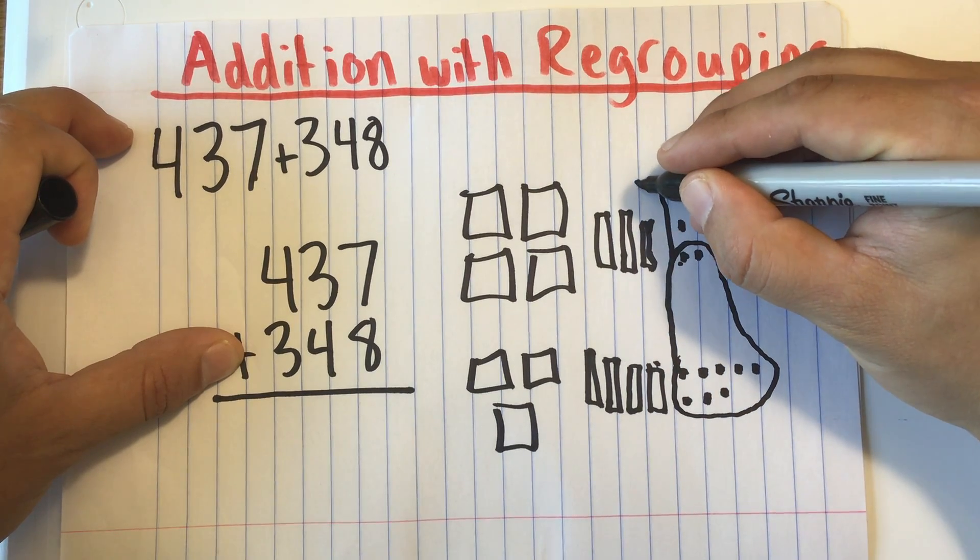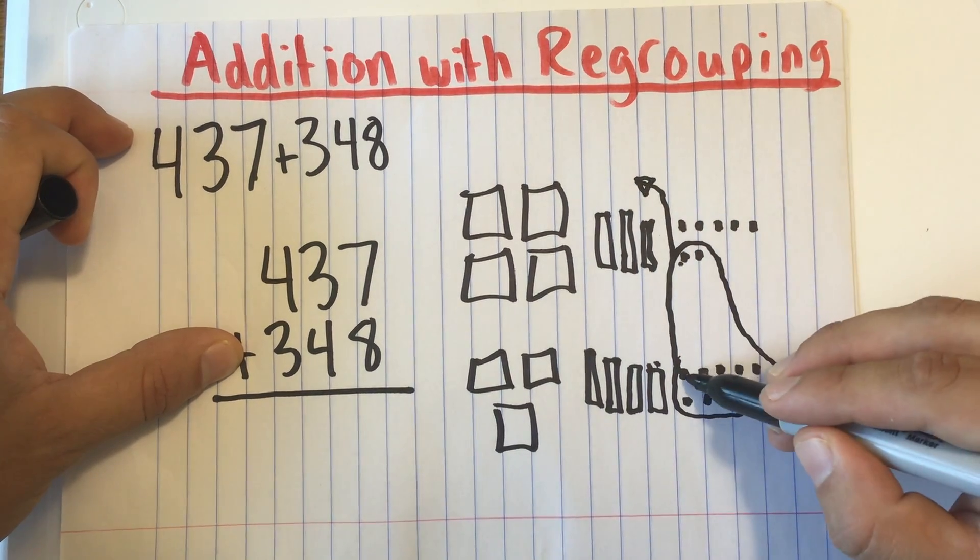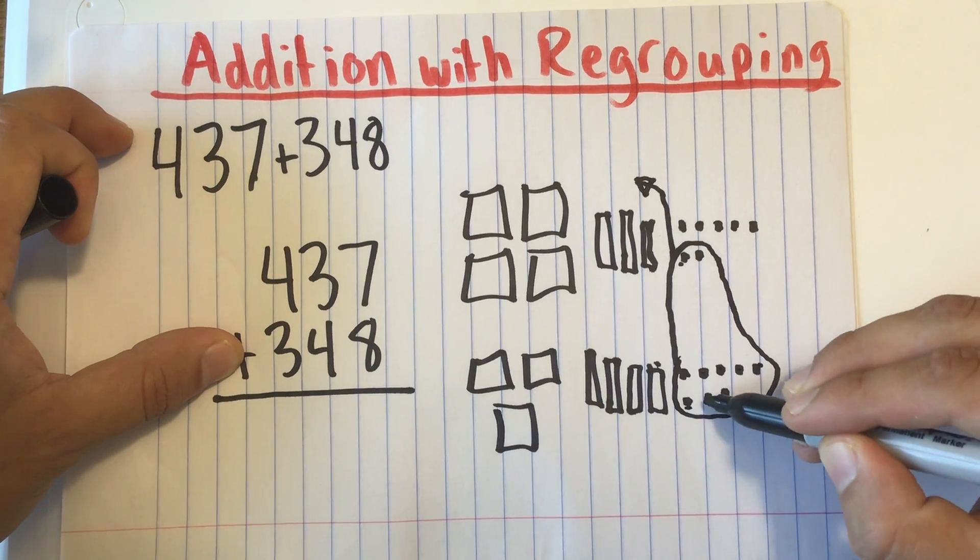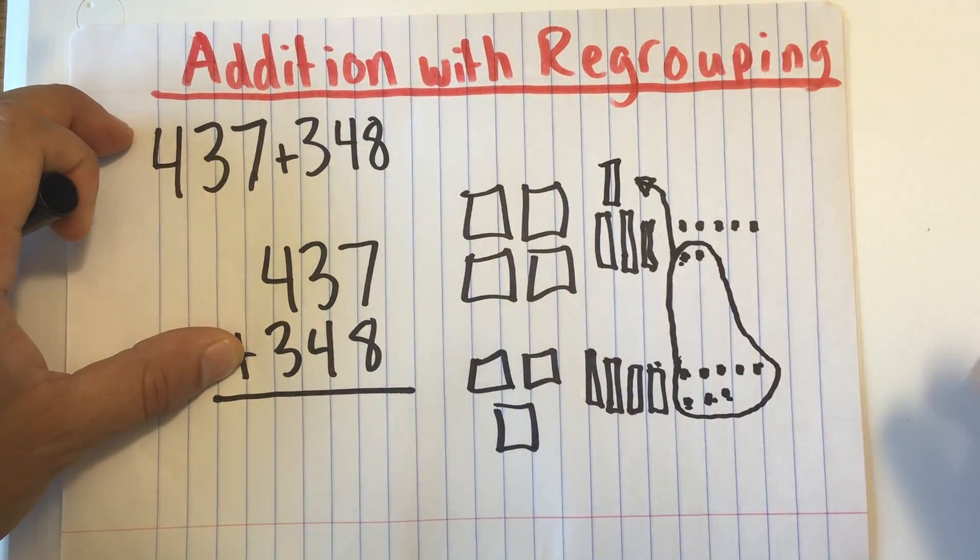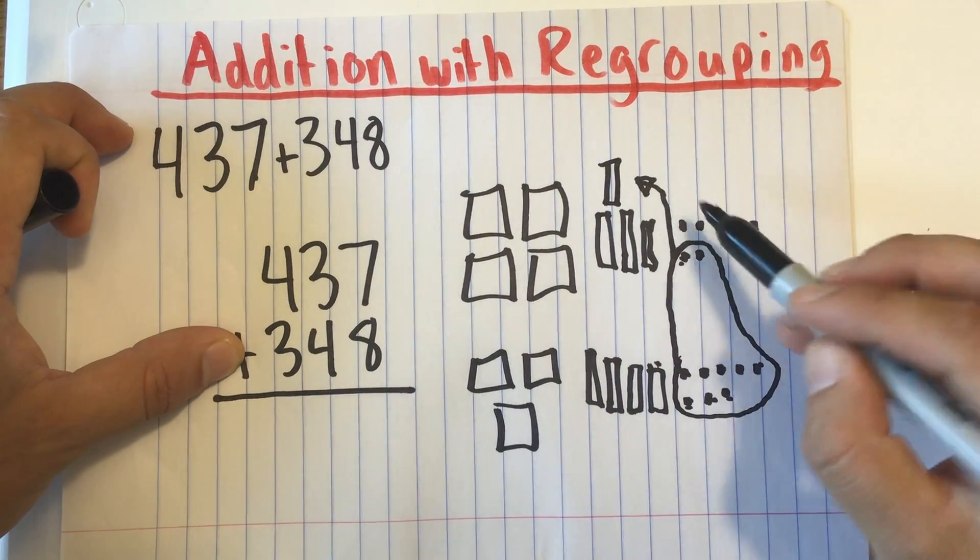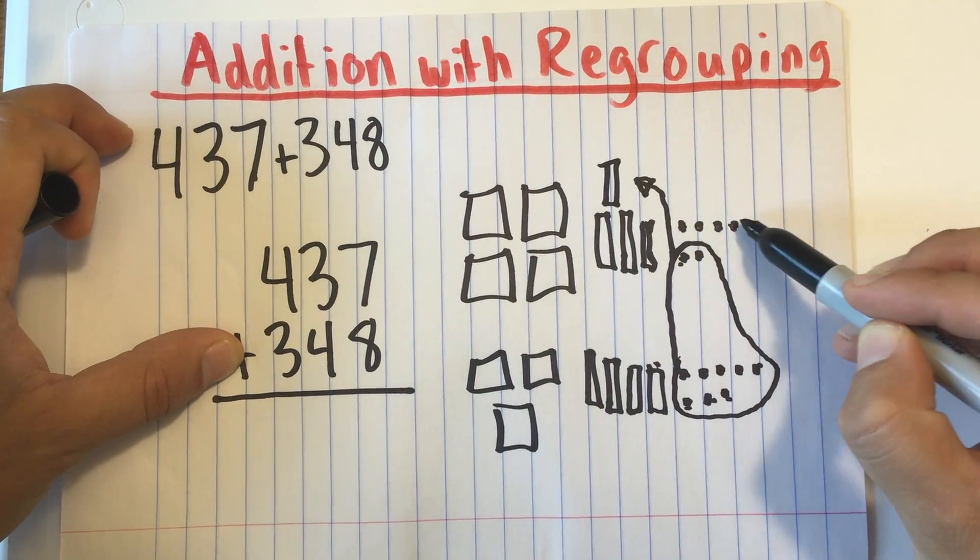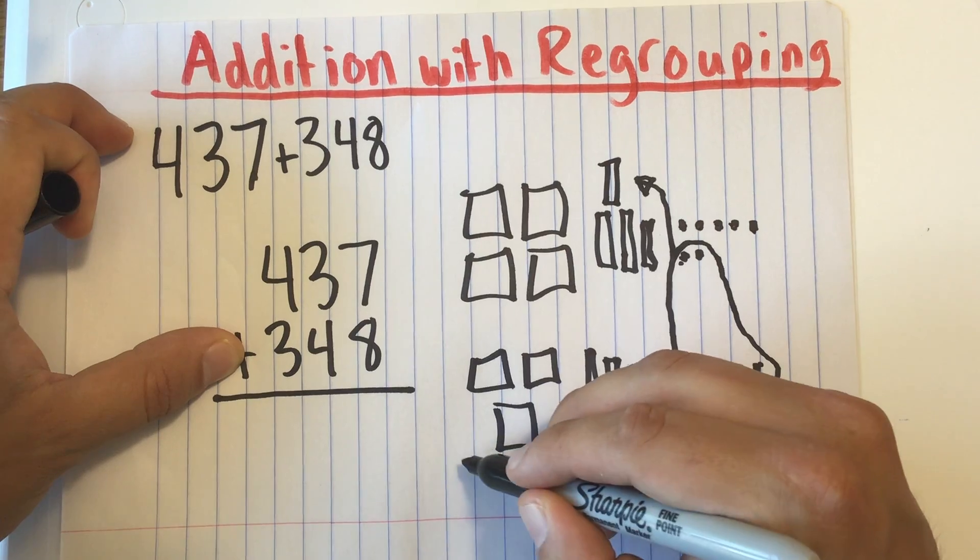So I'm going to regroup these as 10 because in this there's 10. And I made an extra 10. So I'm going to put a 10 up there. And how many ones do I have left over? I have 5.